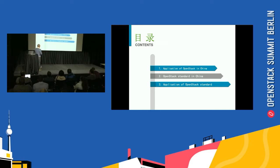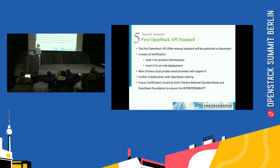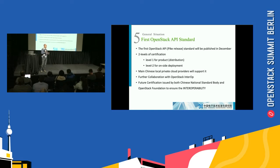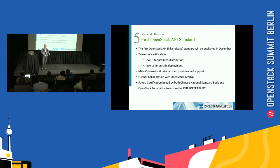Between 2015 and 2017, we defined what we call a reference architecture — how we should design the architecture to provide Infrastructure as a Service. It's not really the implementing details. We define which main functions a cloud computing platform should provide. This work was completed last year, and it is the first version of the reference architecture and the first version of the national standard in China.